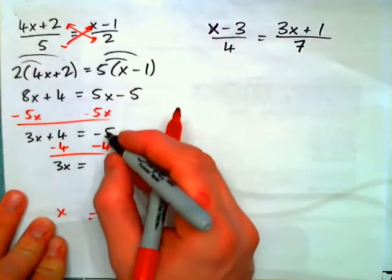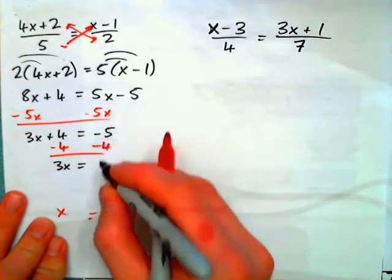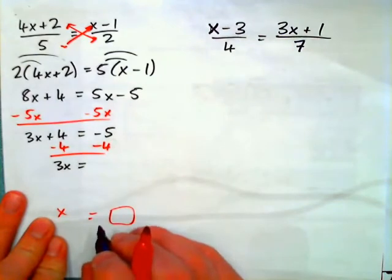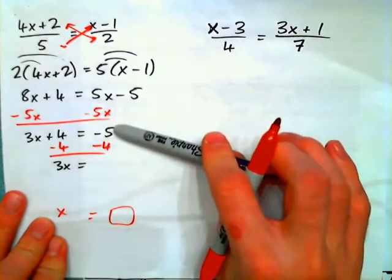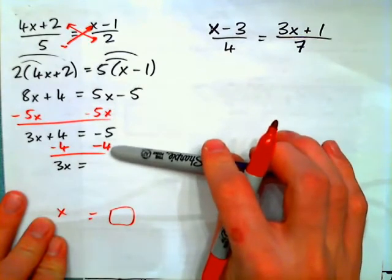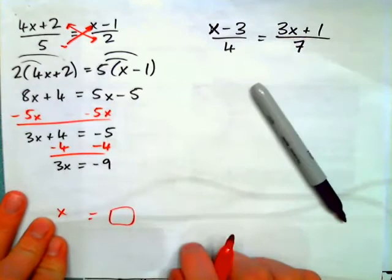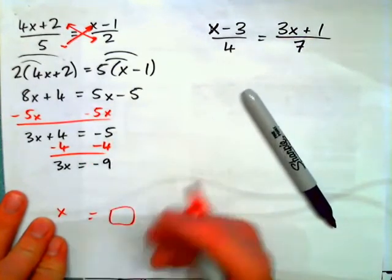3x equals, now, negative 5 minus 4. You're in debt $5. You subtract 4, you'll be in debt $9. Or think of this. 5 negatives combined with 4 negatives gives 9 negatives. Negative 9.